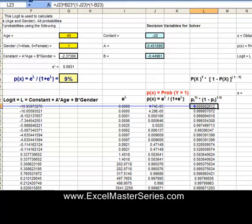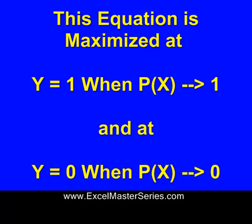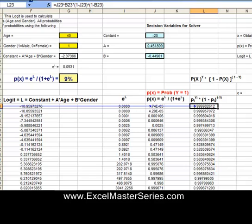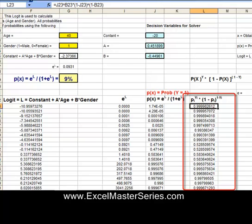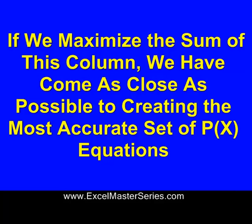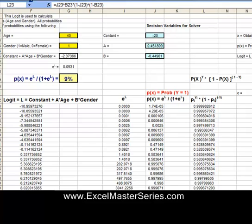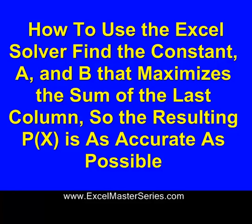Remember, this equation is maximized when the probability equation is most accurate — when Y equals 1 and the probability equation predicts a 100% chance of that happening, and when Y equals 0, it predicts 0% chance. So when the sum of this column is maximized, we've created the most accurate probability equation possible. We're going to use the Solver to do that.